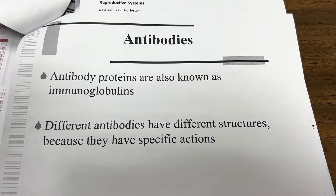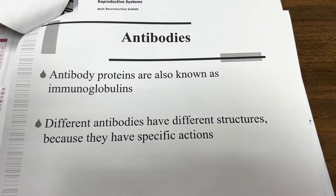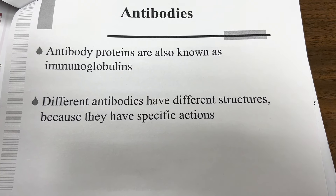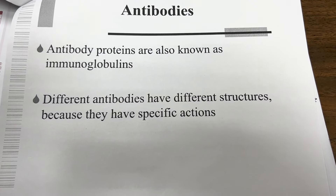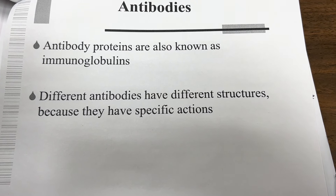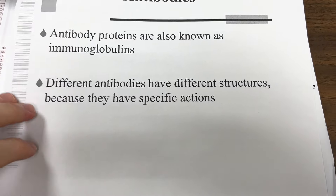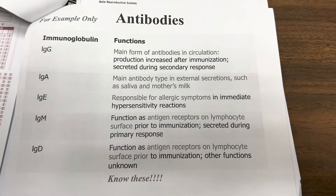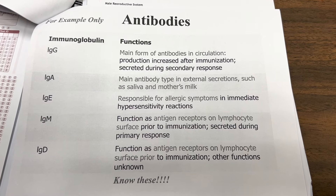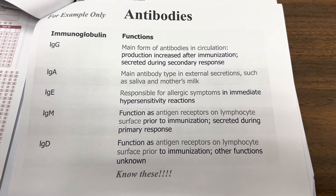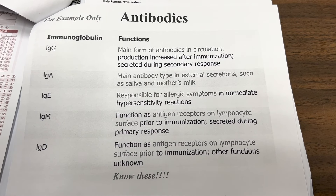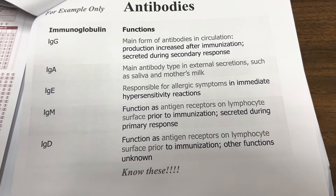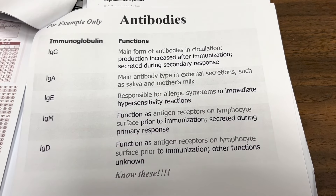Antibody proteins are also known as immunoglobulins. Different antibodies have different structures because they have specific actions. The immunoglobulins to know are: IgG, IgA, IgE, IgM, and IgD.